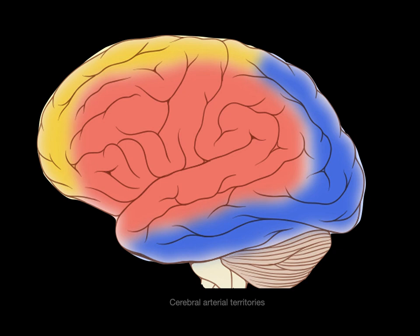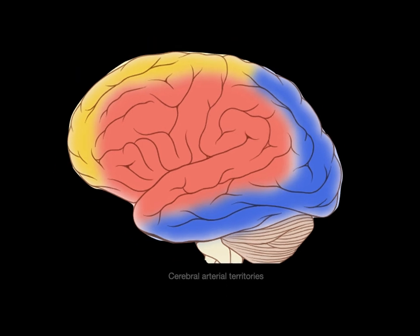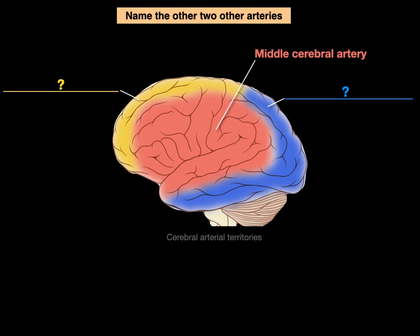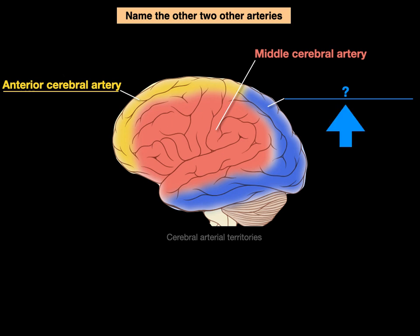How about this one? This is showing the cerebral arterial territories and in salmon color there is the middle cerebral artery. What are the names of the other two arteries? This one is on the front of the brain and it's on the cerebrum, so we'll call it the anterior cerebral artery. And this one is on the back of the cerebrum, so we'll call it the posterior cerebral artery.